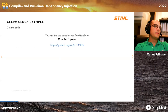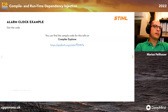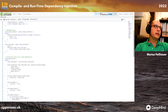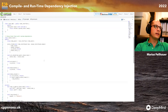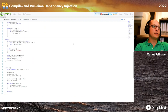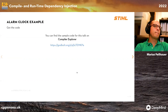Everything I show you can be found on Compiler Explorer — I have the link here. Head over to that page and you'll find the complete source code: the example using runtime dependency injection, and also the compile time dependency injection example.